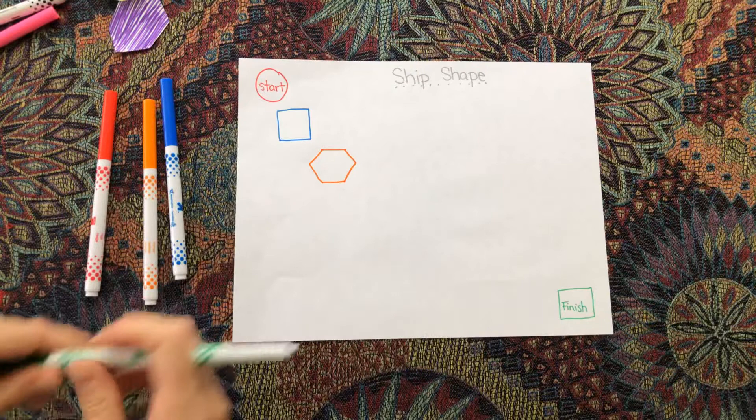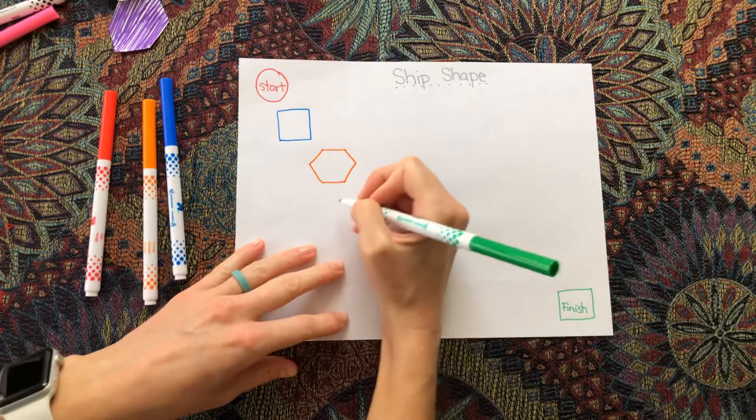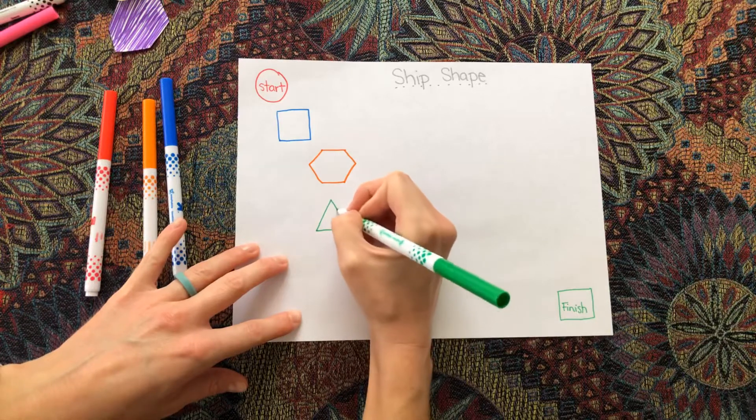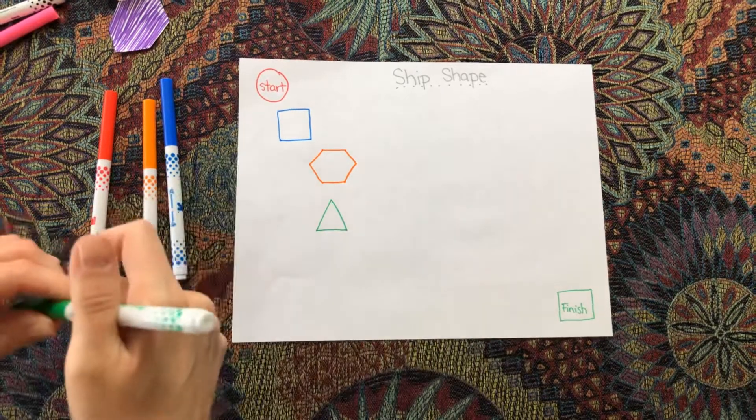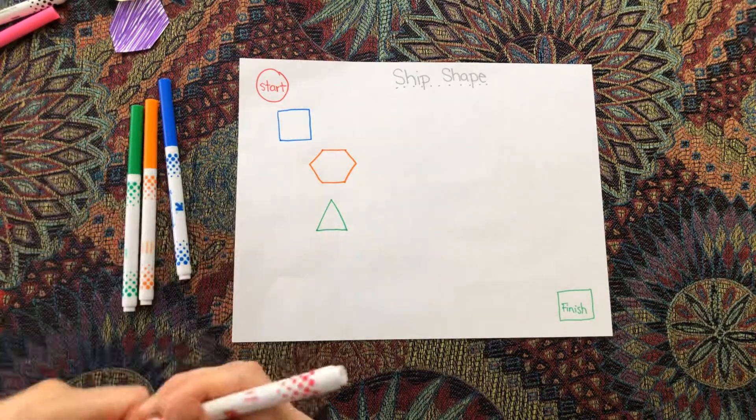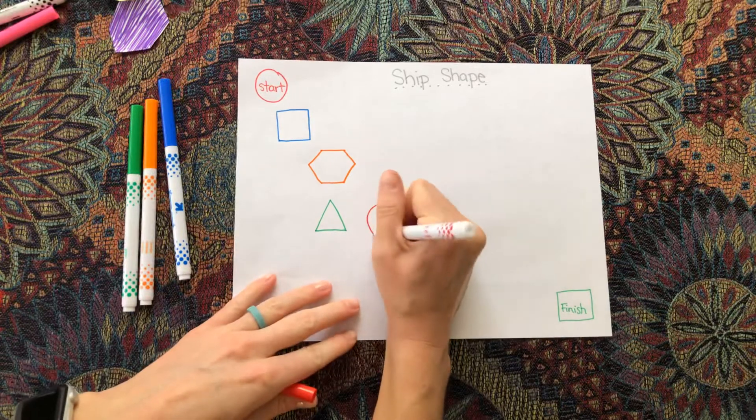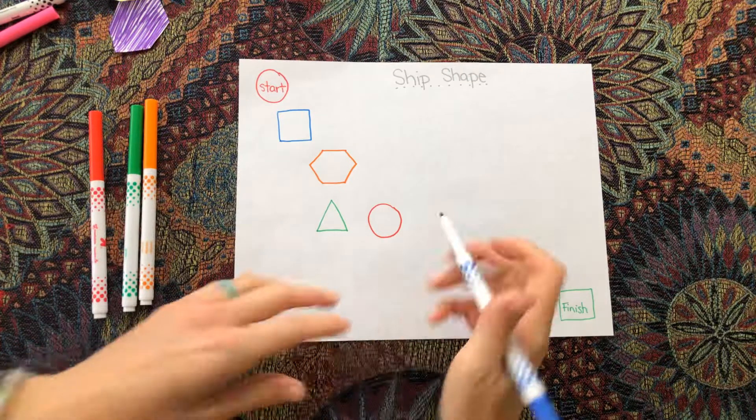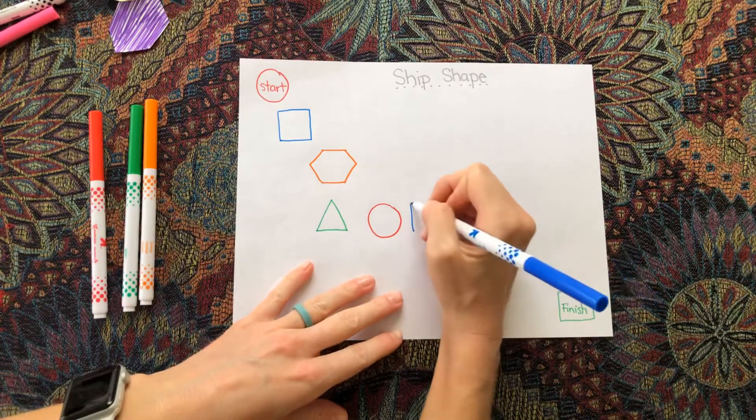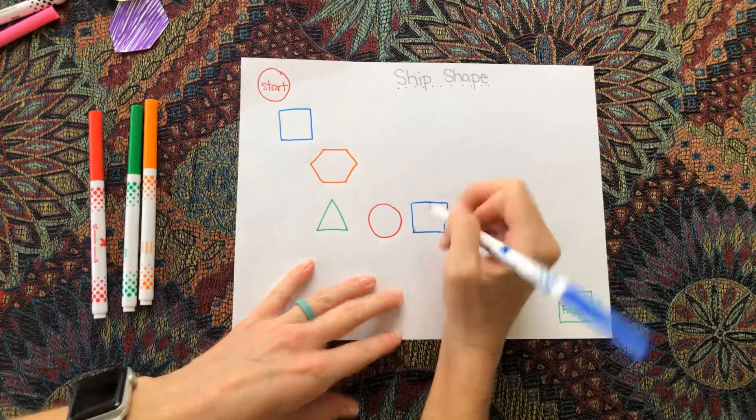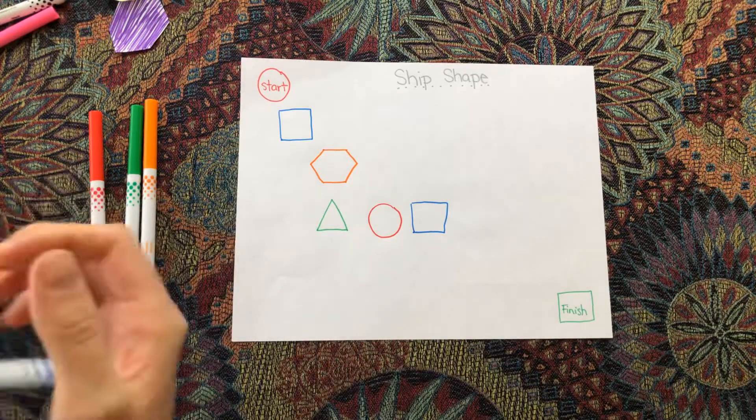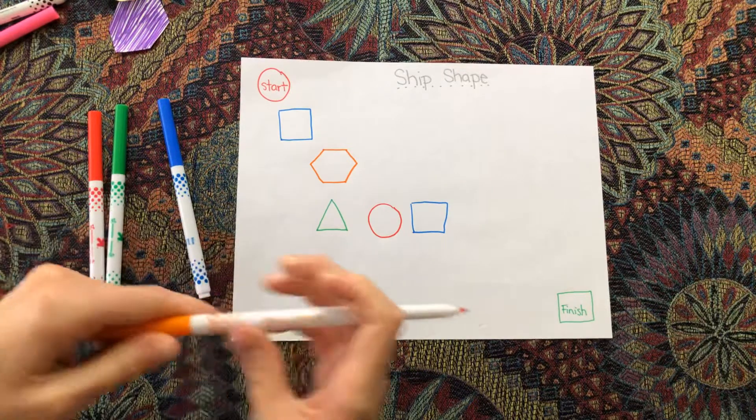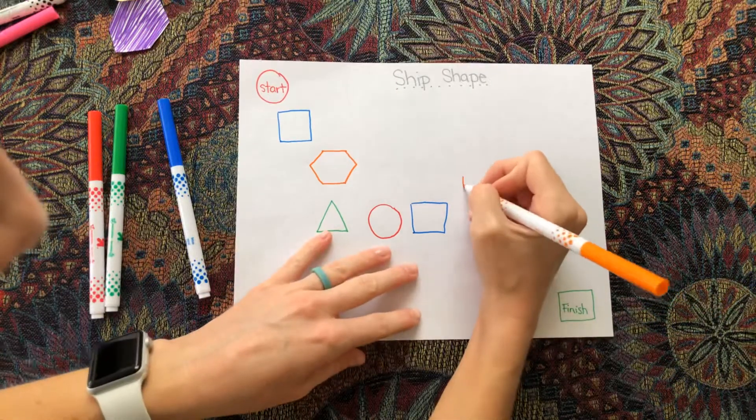Triangle. Circle. I'm going to do a pattern with the colors and the shapes. Oh, but you know what? I forgot to add a rectangle. I'm going to add a rectangle.